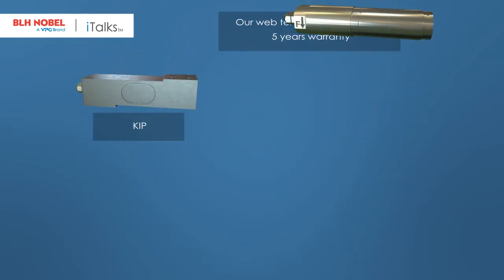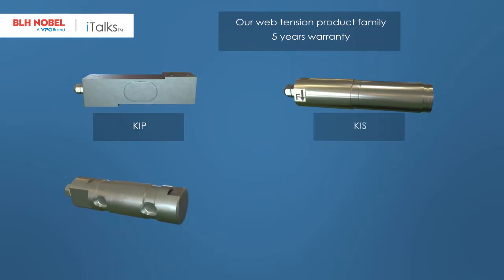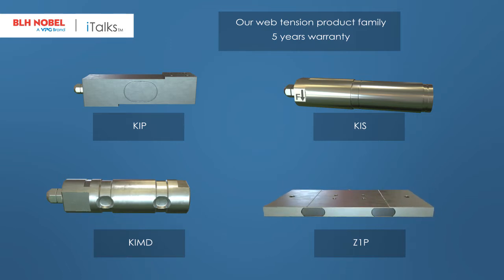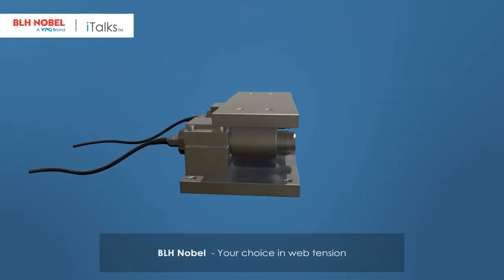The FMU is being used by many of our customers in the paper industry. We also offer a wide range of product designs for specific web tension applications. Our proven high reliability allows us to offer a 5-year warranty on all our web tension units.